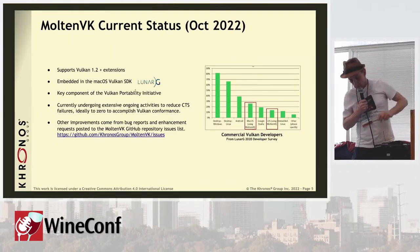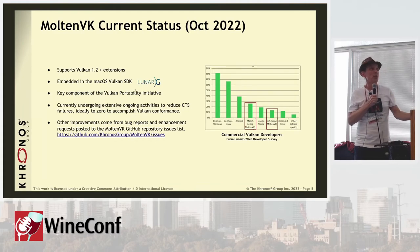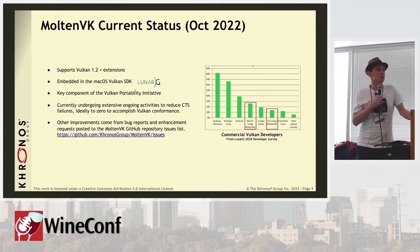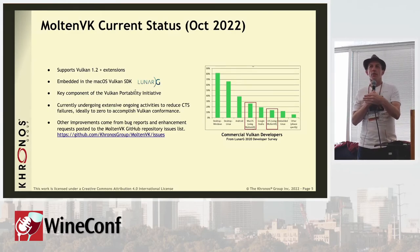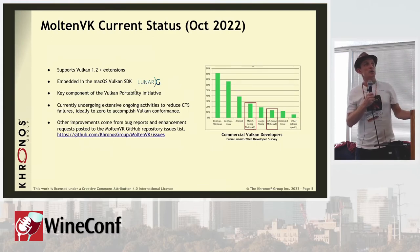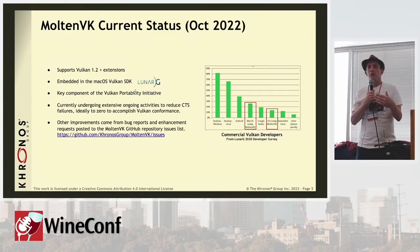The current status of MoltenVK is that it supports Vulkan 1.2 — that actually just came out in the last couple of weeks — plus a number of extensions. It's embedded in the macOS Vulkan SDK that LunarG puts out, and it's a key component of the Vulkan Portability Initiative.